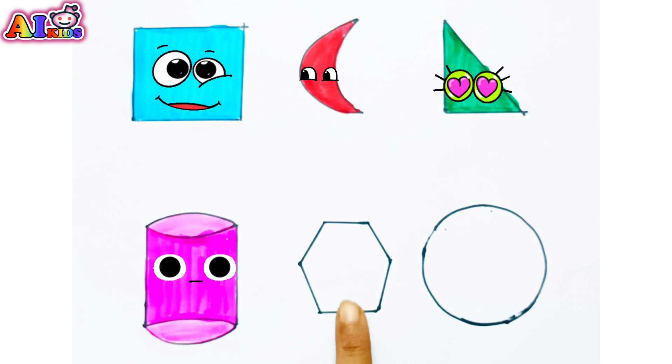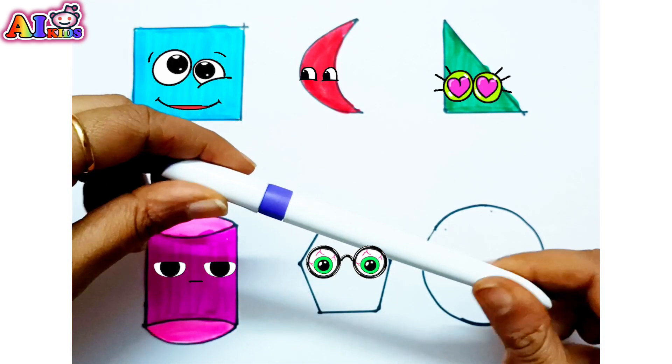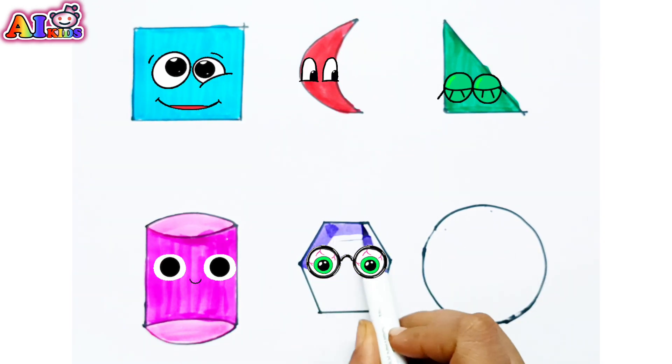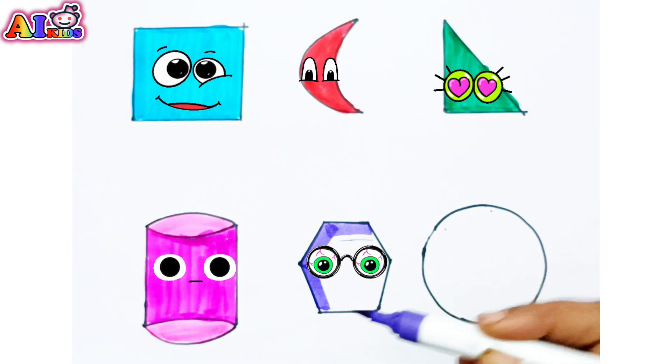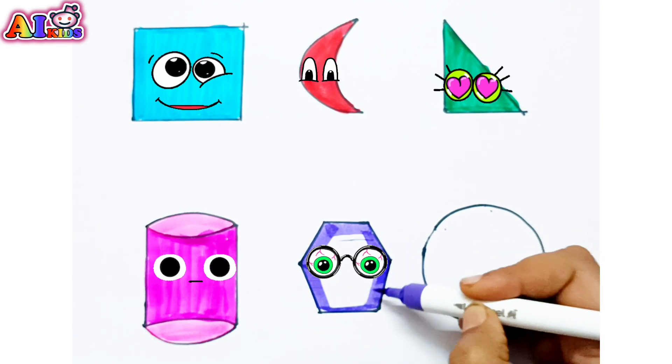This is a hexagon. Let's color this with an exciting purple color. Here is purple. Let's first cover the edges with a color and then let's fill inside. It's easier to fill color this way.